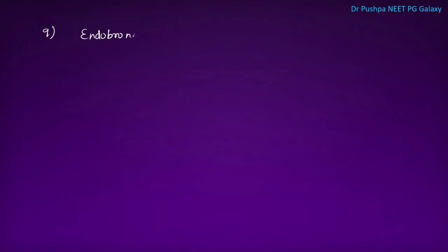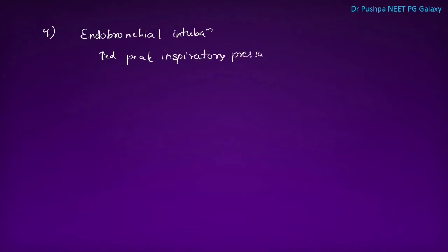What are the signs of endobronchial intubation? There is elevated peak inspiratory pressure, which is the first sign. There is also asymmetric chest expansion and unilateral breath sounds.